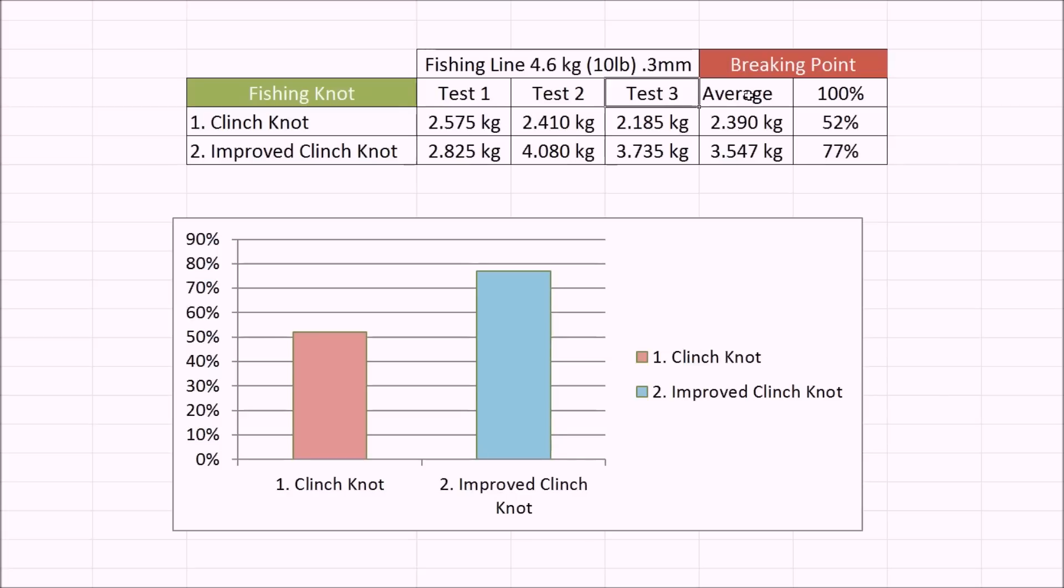We got average breaking points for the clinch knot of 2.3 kilos and average breaking point for improved clinch knot of 3.5 kilos. That means the breaking point of clinch knot is 52% of the capacity of the fishing line.